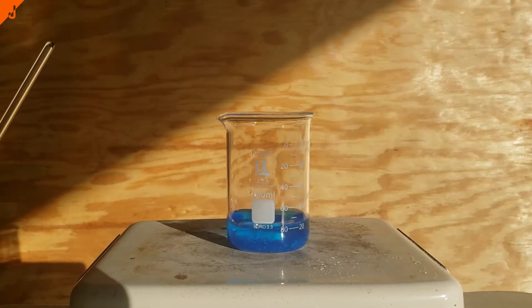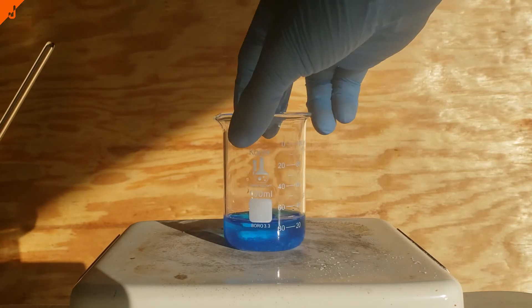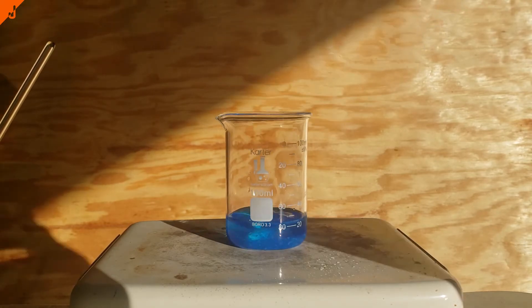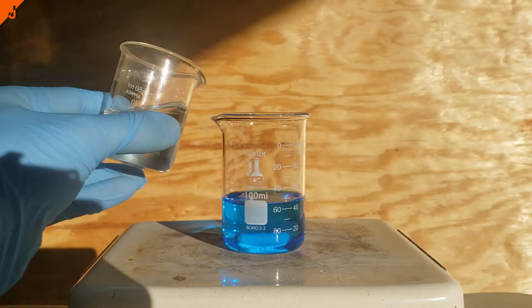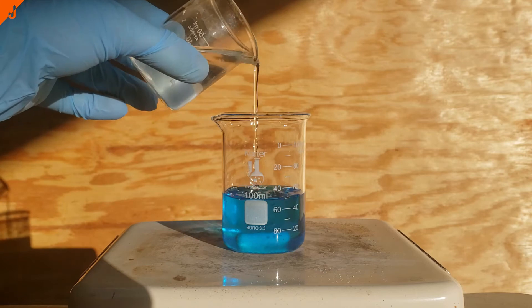To get everything to dissolve in the copper-sulfate solution, I ended up stirring it. Once pretty much everything had dissolved in each solution, I then began slowly adding the potassium bromide.